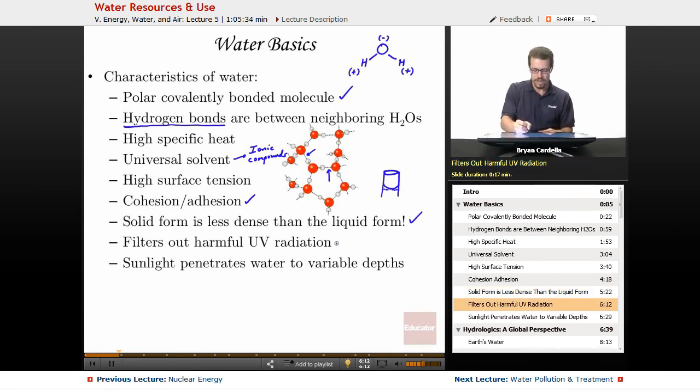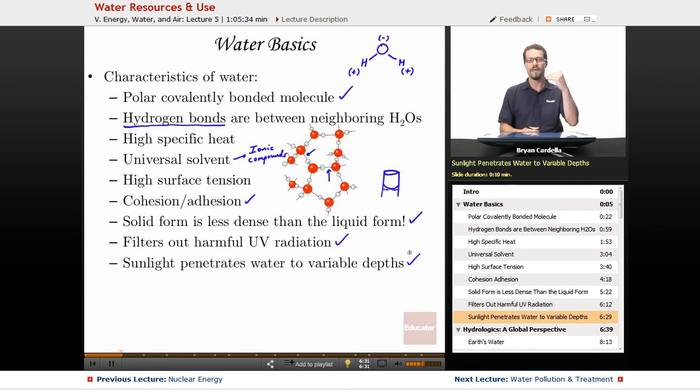Filters out harmful UV radiation. So some aquatic organisms or oceanic organisms can thank the fact that water prevents a lot of UV radiation from getting to them. Otherwise, maybe they would have genetic damage much more quickly due to that radiation exposure. Sunlight penetrates water to variable depths. So photosynthetic organisms can exist below the surface thanks to that quality. So those are some of the water basics that are important.